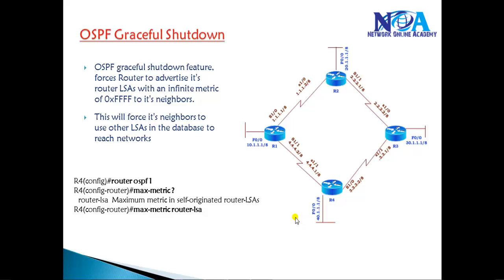In this video we'll talk about the OSPF graceful shutdown feature. OSPF graceful shutdown is something we can add on routers which is going to force the router to advertise its router LSA with an infinite metric. The question is: why do we need to force the router to advertise the maximum metric?